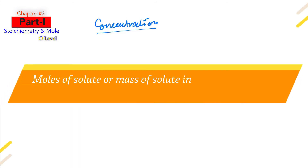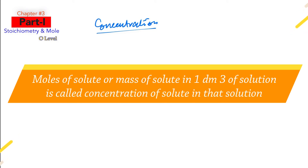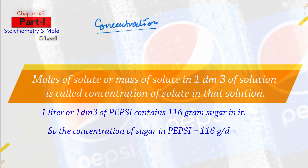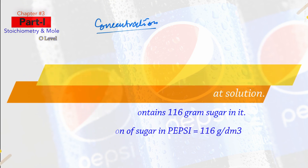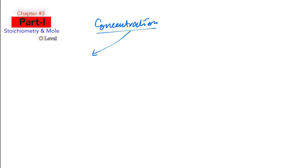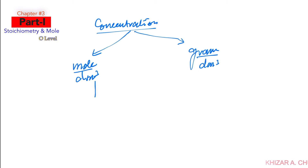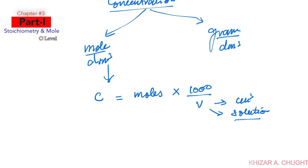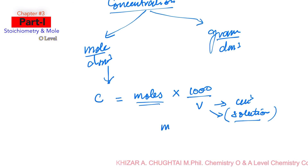Concentration is the moles of solute or mass of solute in 1 dm³ of solution. For example, 1 litre of Pepsi contains 116 grams of sugar, so the concentration of sugar is 116 grams per dm³. Concentration has two units: moles per dm³ and grams per dm³. The formula for concentration in mol/dm³ is: C = moles × 1000 ÷ V, where V is measured in cm³ and is the volume of solution.